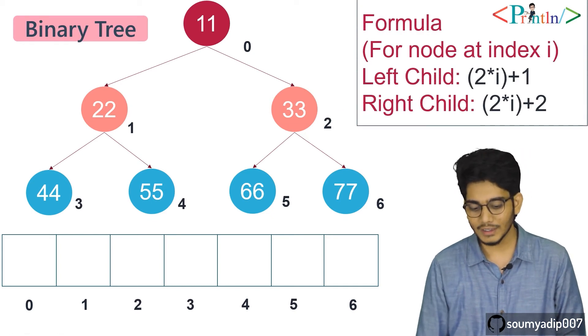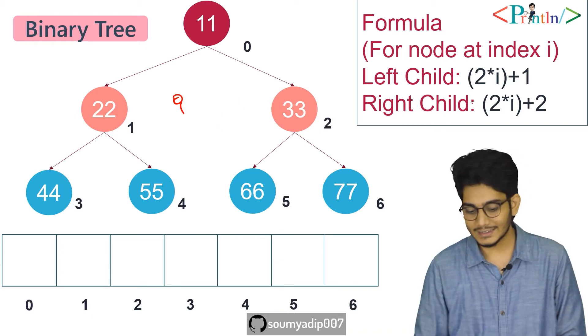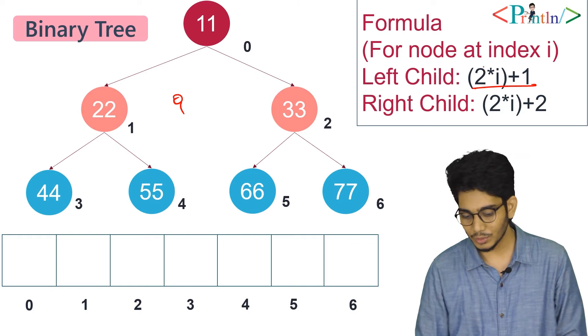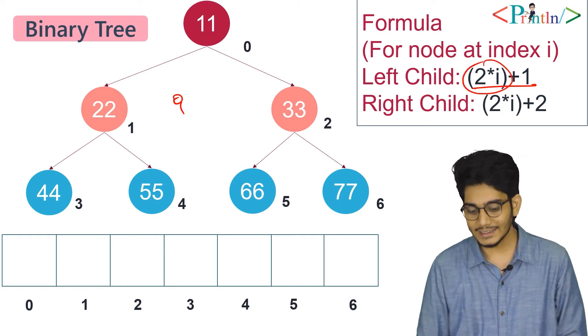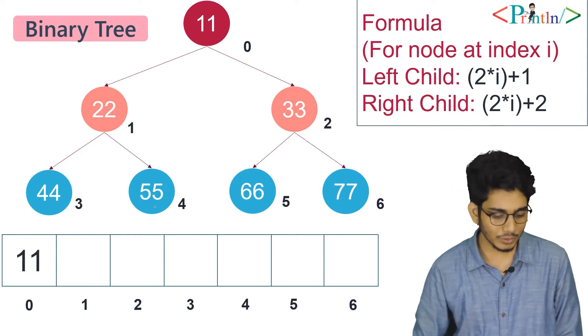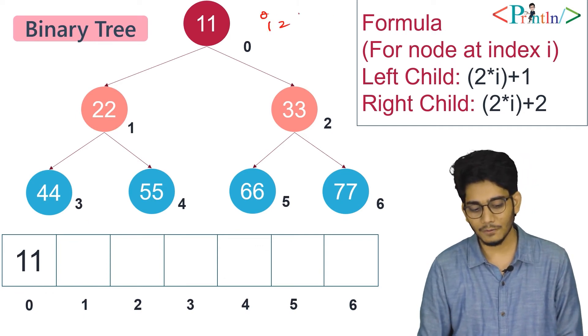If a node is at index i, then its left child will be at 2*i+1 and its right child will be at 2*i+2. At first, we'll insert our root node at position 0. The value of i is 0. If we are trying to insert 22, where do we insert it? 0*2...